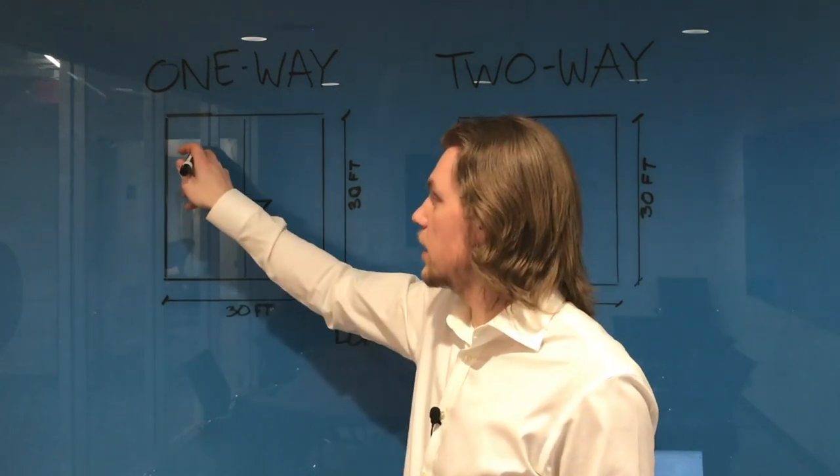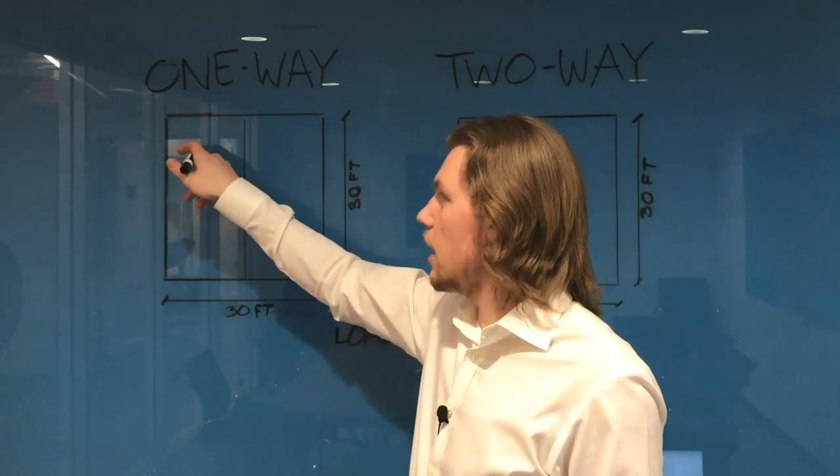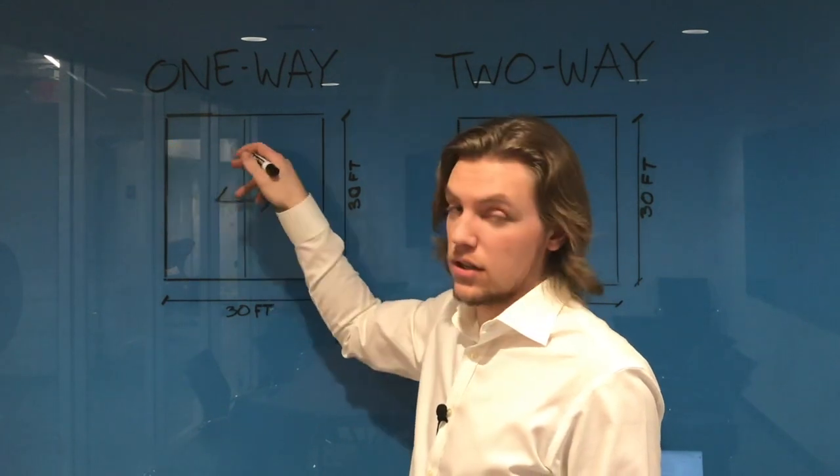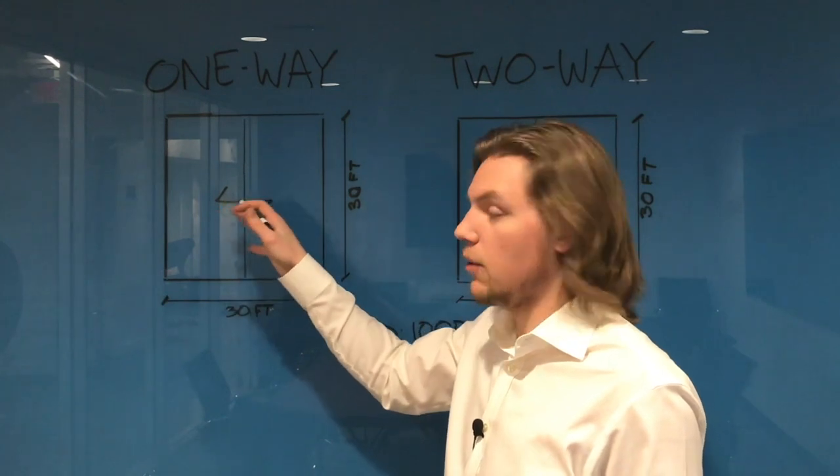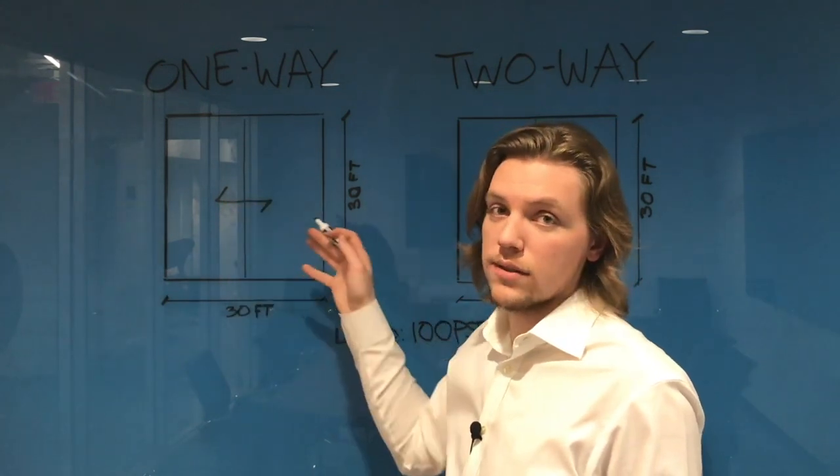So if any load is on top of the slab here, it's either going to go this way or this way, and that's actually going to play into the distribution. But now that we identified the direction that we want the one-way slab to span in, let's talk about the tributary width.